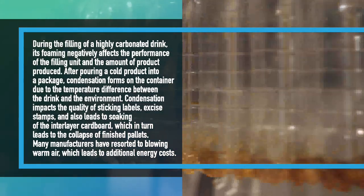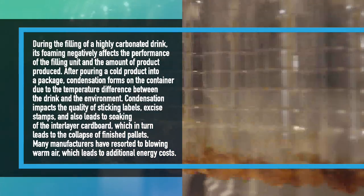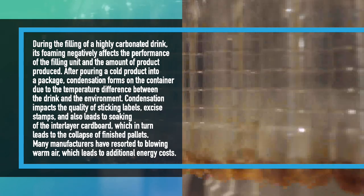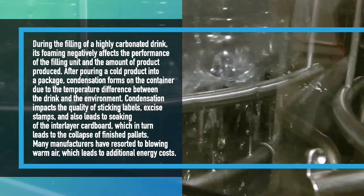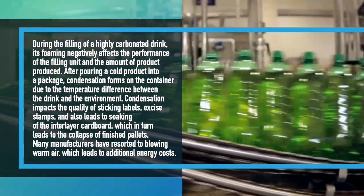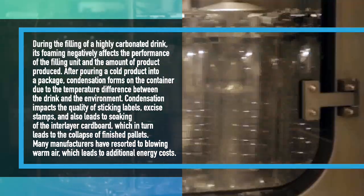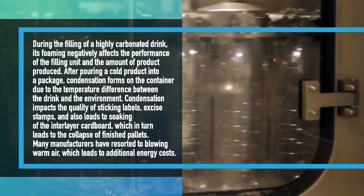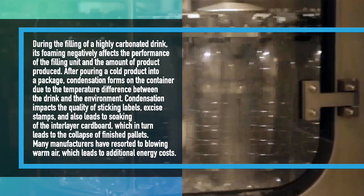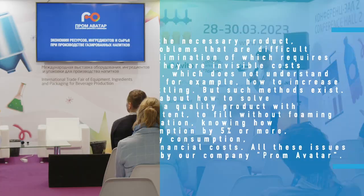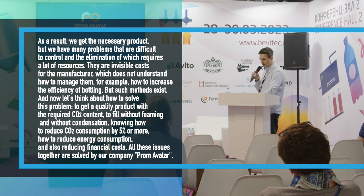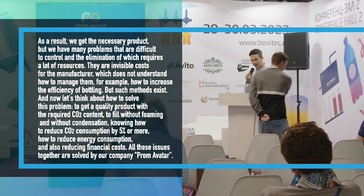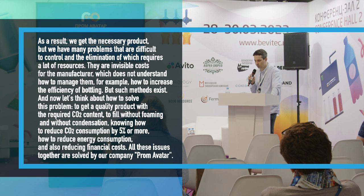After pouring a cold product into a package, condensation forms on the container due to the temperature difference between the drink and the environment. Condensation impacts the quality of sticking labels and excise stamps, and also leads to soaking of the interlayer cardboard, which in turn leads to the collapse of the finished pallets. Many manufacturers have resorted to blowing warm air, which leads to additional energy costs. As a result, we get the necessary product, but we have many problems that are difficult to control and the elimination of which requires a lot of resources. These are invisible costs for the manufacturer, who does not understand how to manage them.